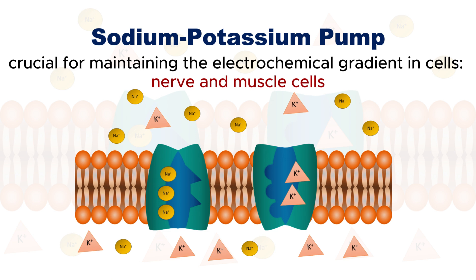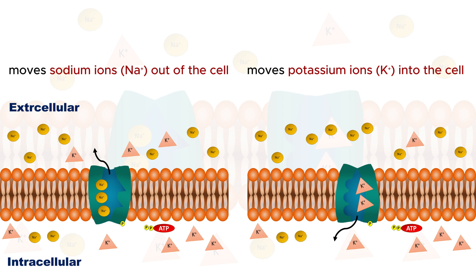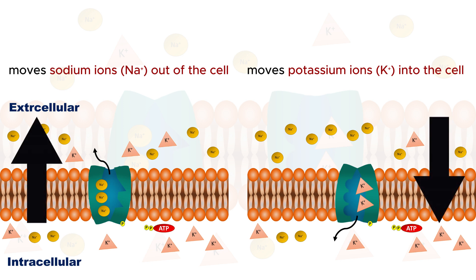The sodium-potassium pump moves sodium ions out of the cell and potassium ions into the cell, both against their concentration gradients. This movement requires energy in the form of adenosine triphosphate, or ATP.